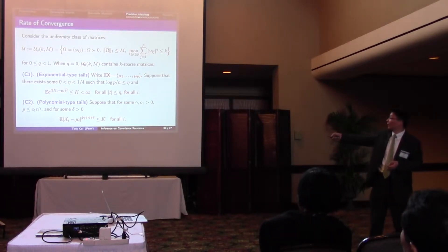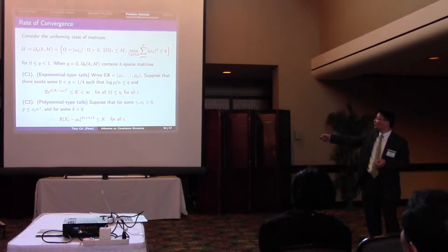but what we need is some tail property of the distribution. Either the distribution has exponential type tails, or it has certain polynomial type tails. So we need to have some tail bound for the distribution.